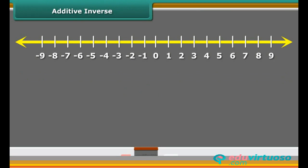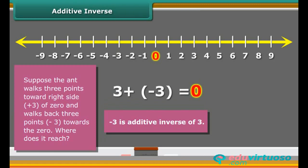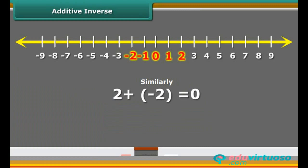Now, we will learn additive inverse. Suppose the ant walks three points from 0 to the right side and walks back three points. Where does it reach ultimately? You can see that it will reach to 0. We add 2 and minus 2. We obtain the sum as 0. Numbers such as 3 and minus 3, 2 and minus 2, when added to each other give the sum 0. They are called additive inverse.